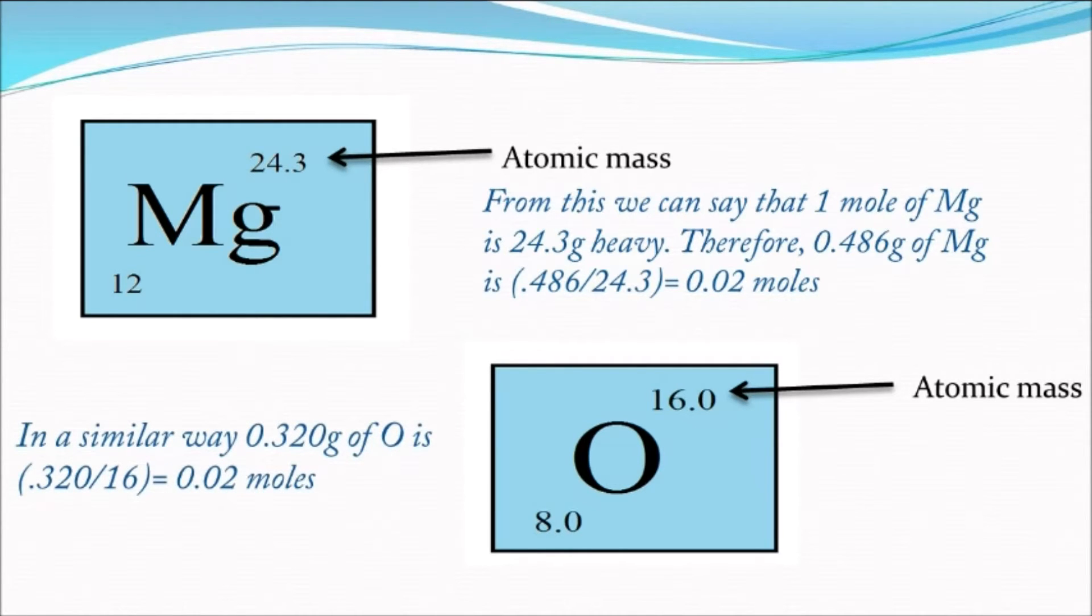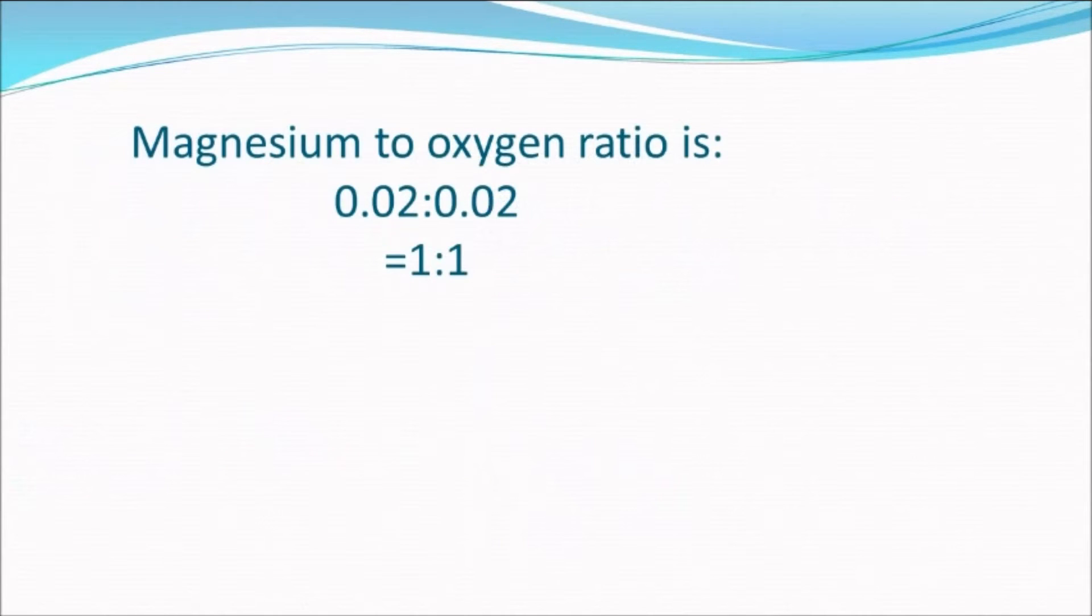In a similar way, 0.320 grams of oxygen is 0.320 over 16, and that is 0.02 moles. So the ratio of magnesium to oxygen is 0.02 to 0.02.